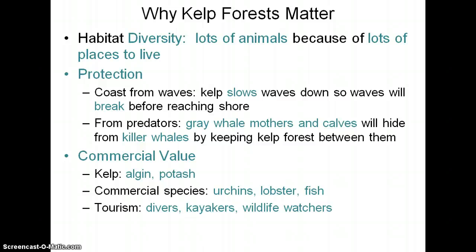Kelp forests also help to protect the coast from waves because the kelp actually slows down the waves before they reach the shore, helping to dissipate wave energy. They also provide protection for lots of different types of animals — even gray whales use kelp forests for protection. They will swim on one side of the kelp forest, closer to shore, because orcas don't normally go there. So gray whales find protection from orcas — which like to eat baby gray whales — by swimming on the other side of kelp forests.